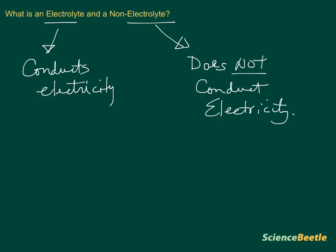This is a very basic explanation of what the two are. But essentially, the way this works, how an electrolyte is able to conduct electricity, is because an electrolyte is a compound that dissolves, forming ions.